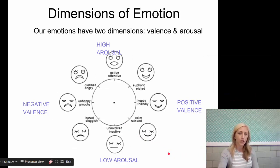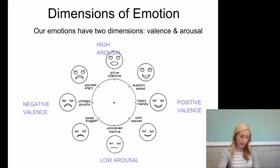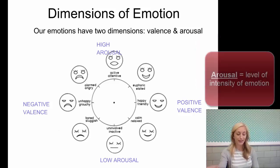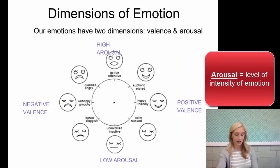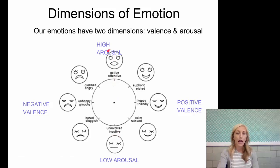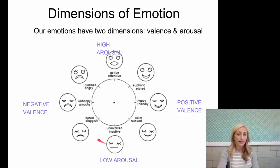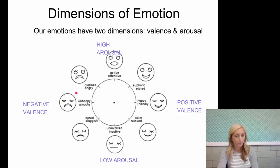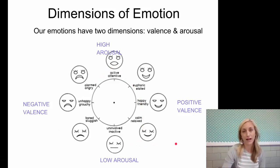Last is our dimensions of emotion. Emotions have two dimensions: valence — think of it as positive or negative — and arousal, which is the high or low intensity of the emotion. It's like a continuum shown on a circle. High arousal with positive valence would be something like excitement. Positive with low arousal is calm contentment. Negative valence with low arousal is boredom or sluggishness. High arousal with negative valence is very intense anger. Know each of these, but most particularly the difference between valence and arousal.